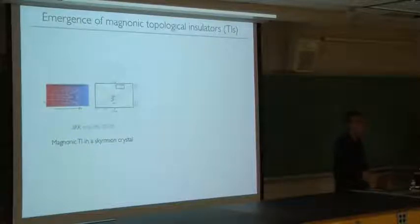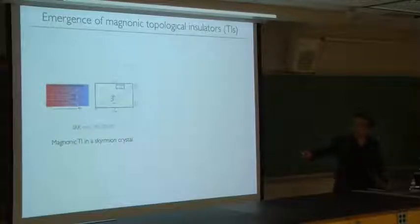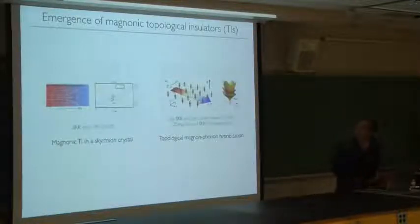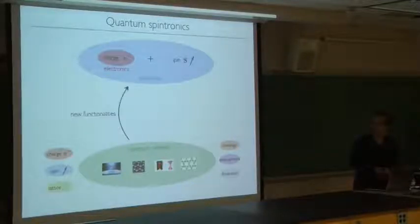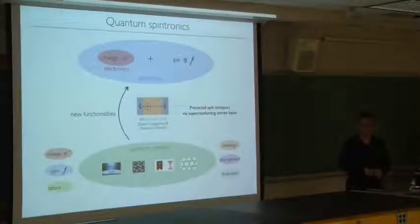The honeycomb ferromagnet is just one example of magnonic topological insulators, which is probably one of the hottest topics in spintronics. There are many other materials that can support topological edge modes. For example, in a recent paper, we showed that the skyrmion crystal phase of certain magnets can be classified as a magnonic topological insulator. We have also been working on topological properties of magnon-phonon hybridization in certain magnets with magneto-elastic coupling.